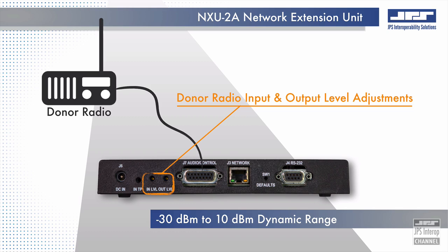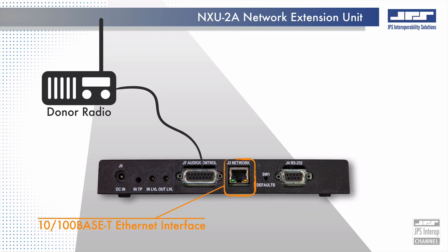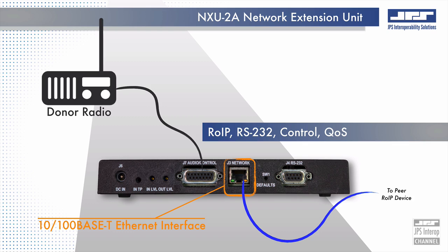40 dB of input and output dynamic range ensures distortionless and transparent interoperability with nearly any LAN mobile radio system. The 100Base-T interface provides a standards-based connection to wide area networks, local networks, and even the internet, supporting the sharing of ROIP and control as well as configuration of the module's audio and network parameters such as quality of service.